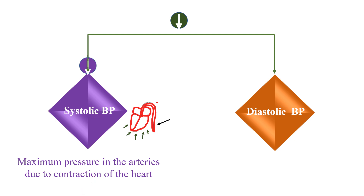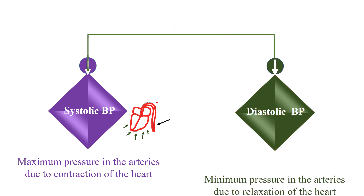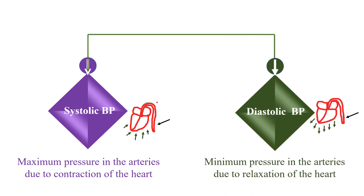Diastolic blood pressure is the minimum pressure in the arteries due to the relaxation of the heart. In this case, ventricles are relaxing. As ventricles are relaxing, they are not pumping blood into their arteries. Hence the pressure in the arteries is minimum — that is why the value of diastolic blood pressure is less. Diastole means relaxation.